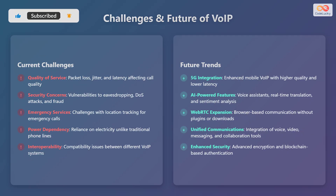VoIP offers numerous advantages, but also faces several challenges. Quality of service issues such as packet loss, jitter, and latency can significantly impact call quality. Security concerns — including vulnerabilities to eavesdropping, denial of service attacks, and fraud — require robust security measures. Emergency services present challenges with accurately tracking caller locations. Power dependency is another issue, as VoIP relies on electricity, unlike traditional phone lines. Interoperability problems can also arise due to compatibility issues between different VoIP systems.